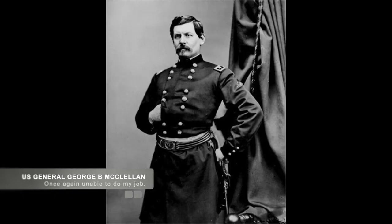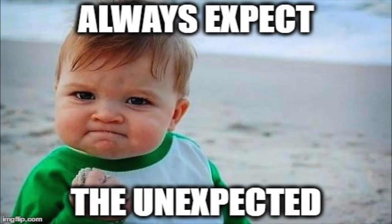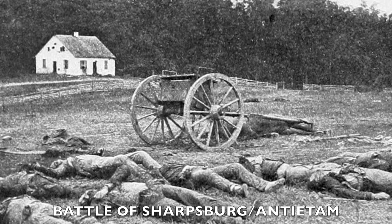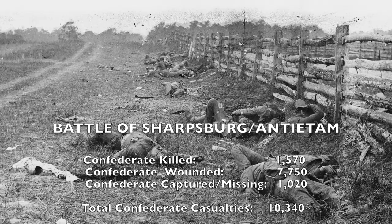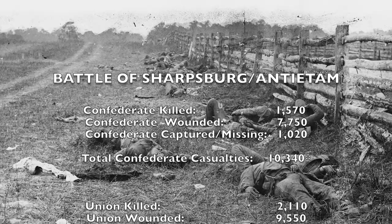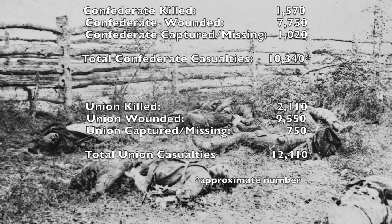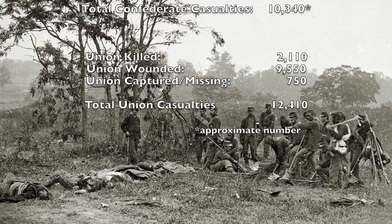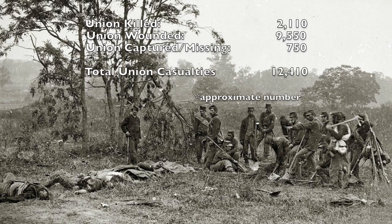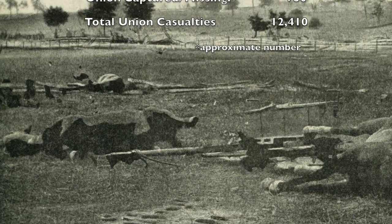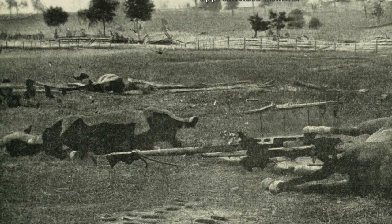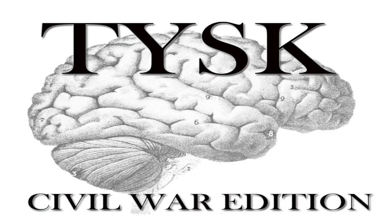The morning of September 18th showed Union commander McClellan refusing to attack Lee's forces again, resulting in an unexpected and resounding victory for the Confederates as McClellan pulled his men back. The final casualties were brutal. Confederate losses were approximately 1,570 killed, 7,750 wounded, and 1,020 captured or missing, for a total of approximately 12,410 men. Union losses were higher with 2,110 killed, 9,550 wounded, and 750 captured, for a total approximate loss of 12,410 men. Please join us again next time on Things You Should Know, Civil War Edition.